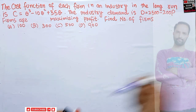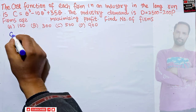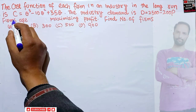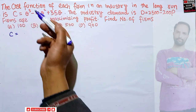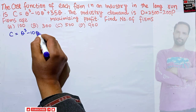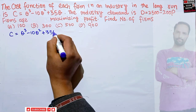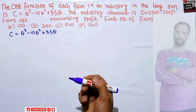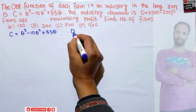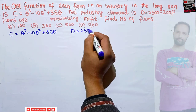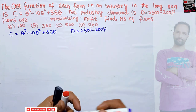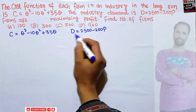We are given the cost function of an individual firm. We assume that all firms are identical, so this cost function represents all firms. It is given by C = q³ - 10q² + 35q. We are also given the industry demand: D = 2500 - 200p.